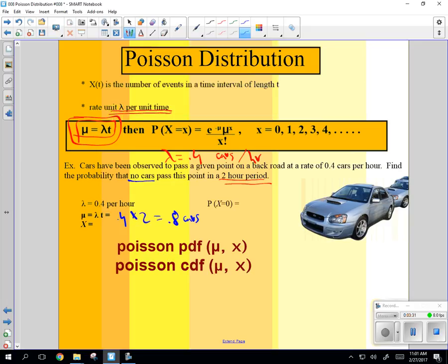So, find the probability that no cars, so x in this case, is going to be equal to 0. Let's see if we can figure it out. Well, let's use the formula.